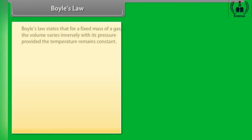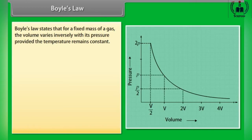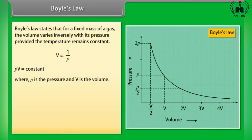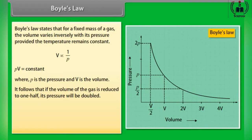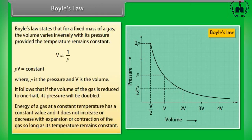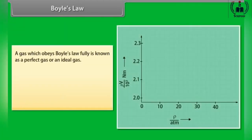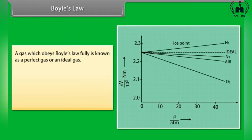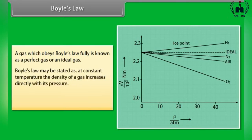Boyle's Law states that for a fixed mass of a gas, the volume varies inversely with its pressure provided the temperature remains constant. PV equals constant, where P is the pressure and V is the volume. It follows that if the volume of the gas is reduced to one half, its pressure will be doubled. The energy of a gas at constant temperature has a constant value and does not increase or decrease with expansion or contraction so long as its temperature remains constant. A gas which obeys Boyle's Law fully is known as a perfect gas or an ideal gas. Boyle's Law may also be stated as: at constant temperature, the density of a gas increases directly with its pressure — P upon rho equals constant.